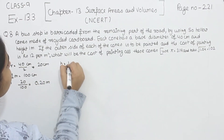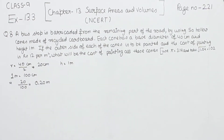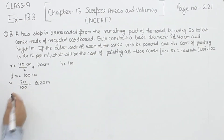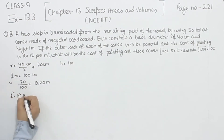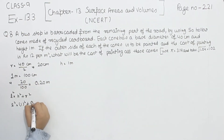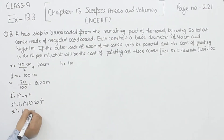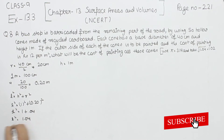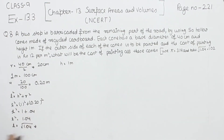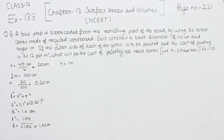The height we have is 1 meter. Now we have to find the slant height for the curved surface area. We are going to apply the Pythagoras theorem: L squared is equal to h squared plus r squared. So L squared equals 1 squared plus 0.20 squared, which gives us 1 plus 0.04, so L squared equals 1.04. Therefore L equals root 1.04, which is 1.02 meter.